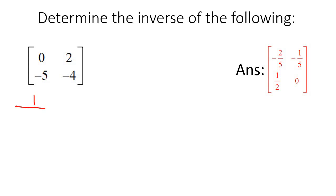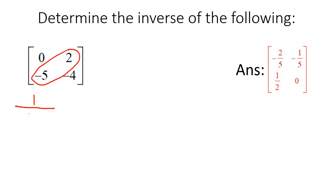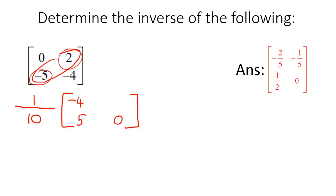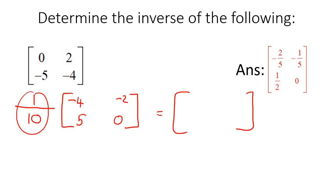Next example: 1 over the determinant. These two multiplied together is 0, subtract these two multiplied together which is negative 10. A negative and negative makes positive, so 0 plus 10 is 10. Now the new matrix: we switch these two numbers around — negative 4 and 0. For the other two, we change their signs: negative 5 becomes positive 5, and positive 2 becomes negative 2. Multiplying: 1/10 times negative 4 is negative 4/10, which simplifies to negative 2/5.